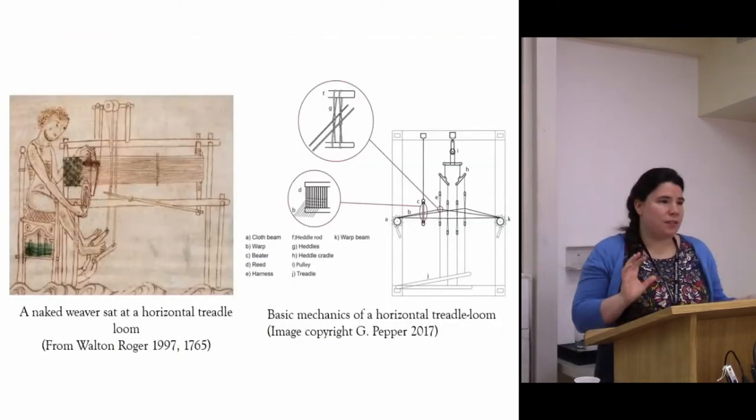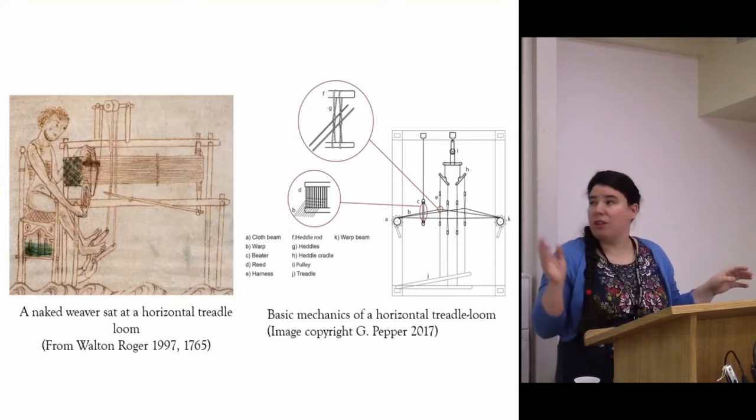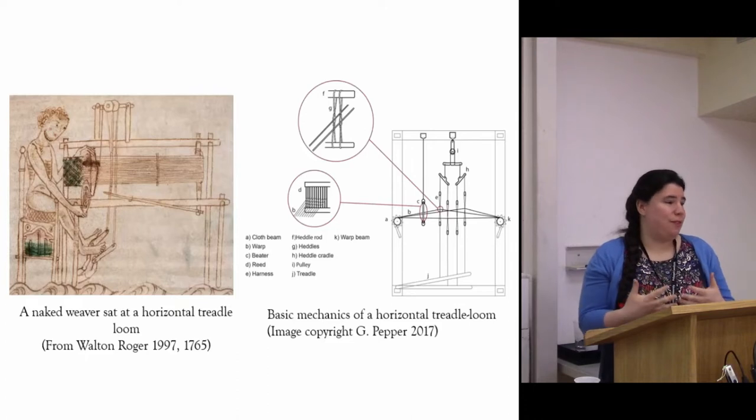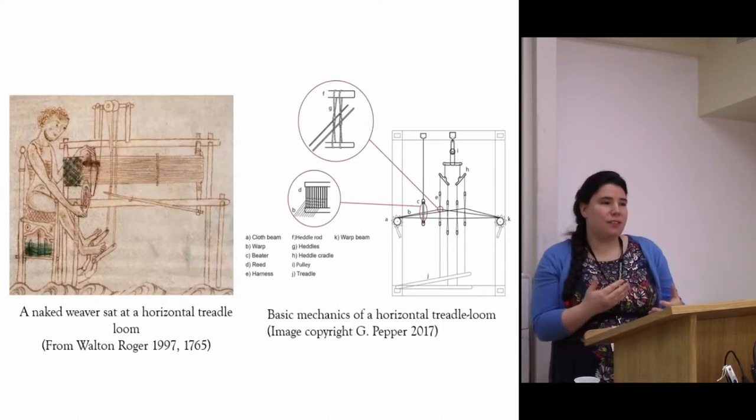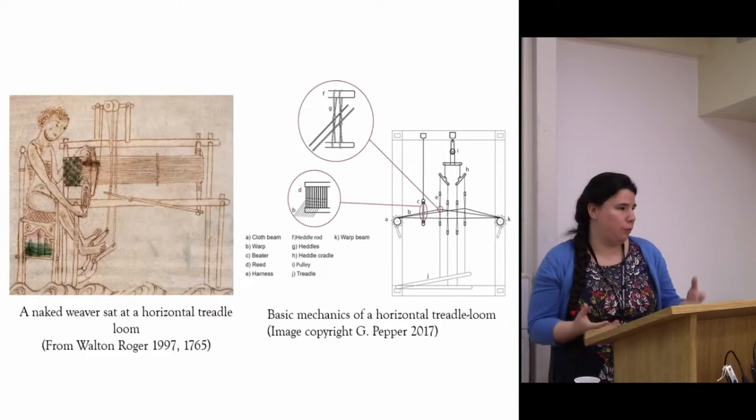Around the year 1000 you see the introduction of this new type of loom, the horizontal treadle loom, pictured here. This loom is understood to be faster to weave with, and it's typically associated with the formation of weaving guilds around this time, with men taking over textile production, and with increased commercial production.